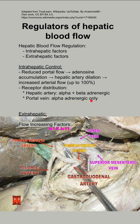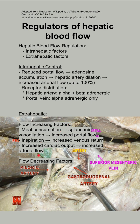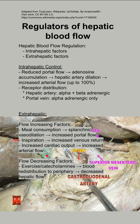There are a number of extra-hepatic factors that regulate hepatic blood flow. Some that increase flow: meal consumption, which causes splanchnic vasodilation and increases portal flow; inspiration, which increases venous return; and increased cardiac output, which also increases arterial flow.